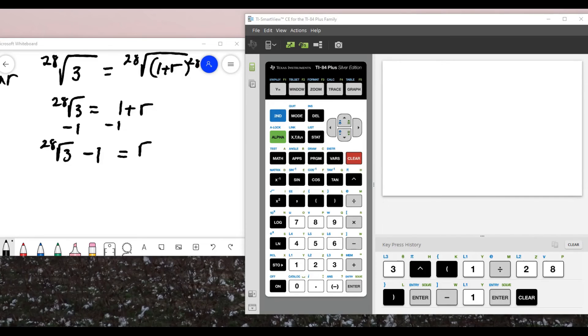Let's type that in the calculator to get a decimal approximation. So to type the 28th root, I'm going to rewrite this as 3 to the 1 over 28 minus 1.